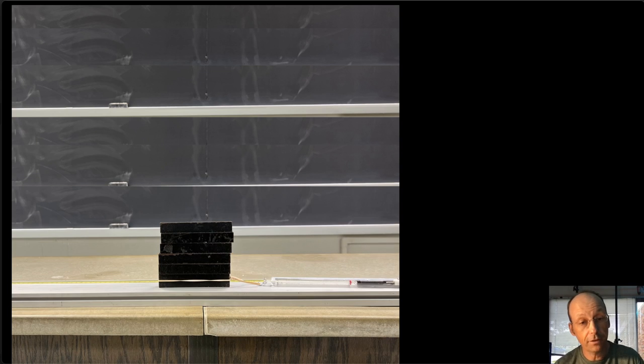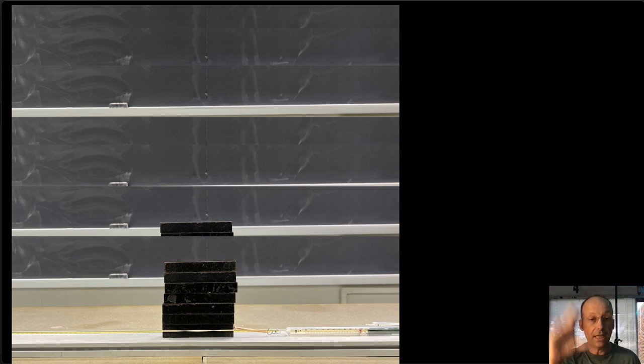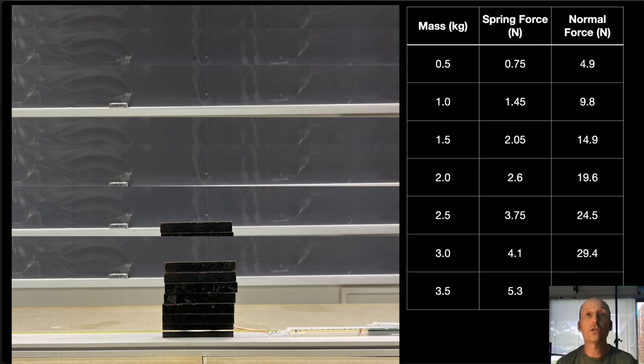I have a rubber band around a 500-gram block and pull it with a spring scale. I like the rubber band because it makes it less jerky. I pull with one block, then stack another on top, increasing the gravitational force and thus the normal force, but without changing the contact area. I go up to seven blocks and record the spring force reading each time. Here's my data.